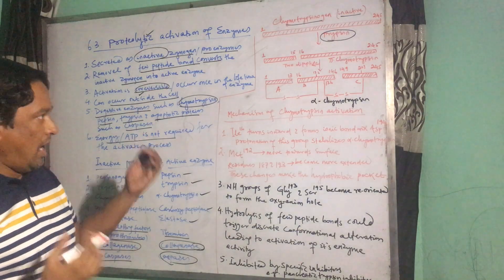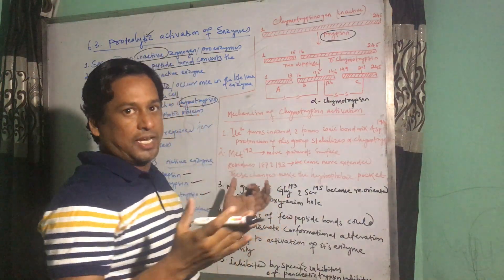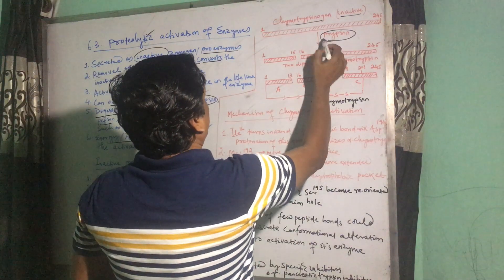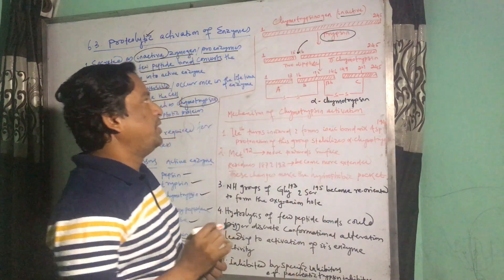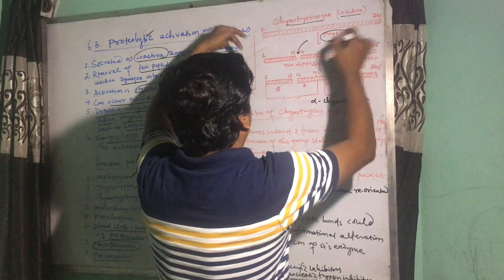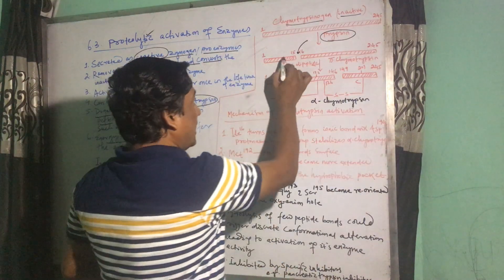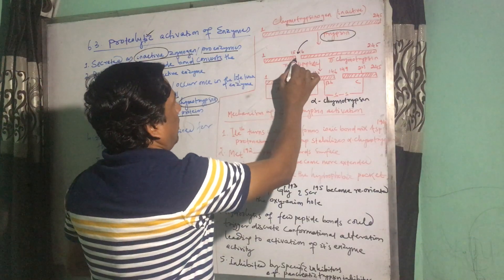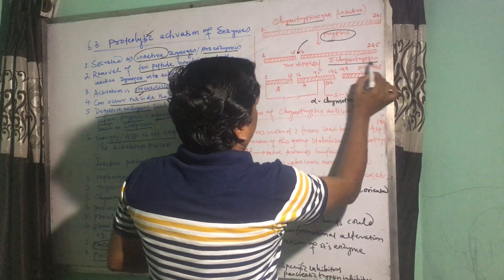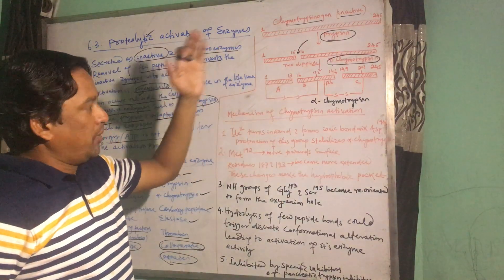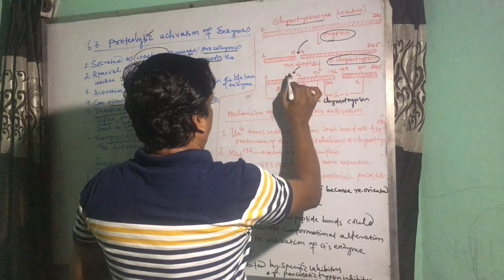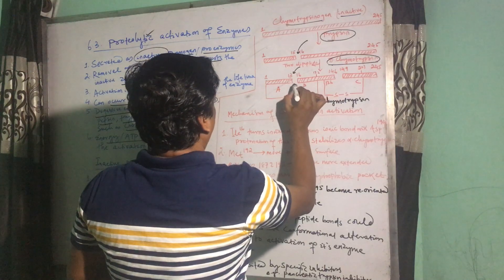Trypsin is always present in the digestive tract throughout the life cycle. Trypsin cleaves the bond between the 15th and 16th amino acids, making the single polypeptide into two fragments which are still joined by disulfide bridges. By doing this, chymotrypsinogen becomes pi-chymotrypsin, which is active but not yet completely active.